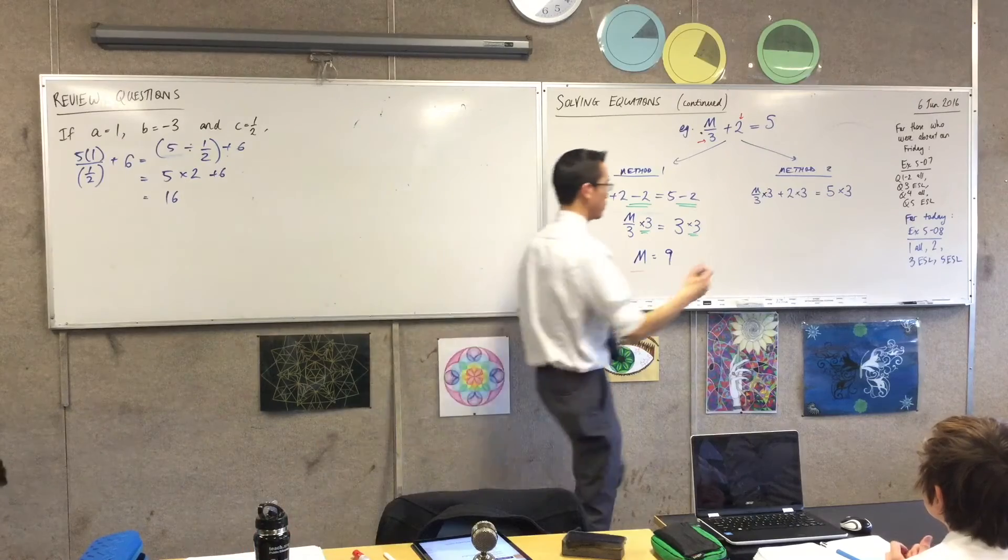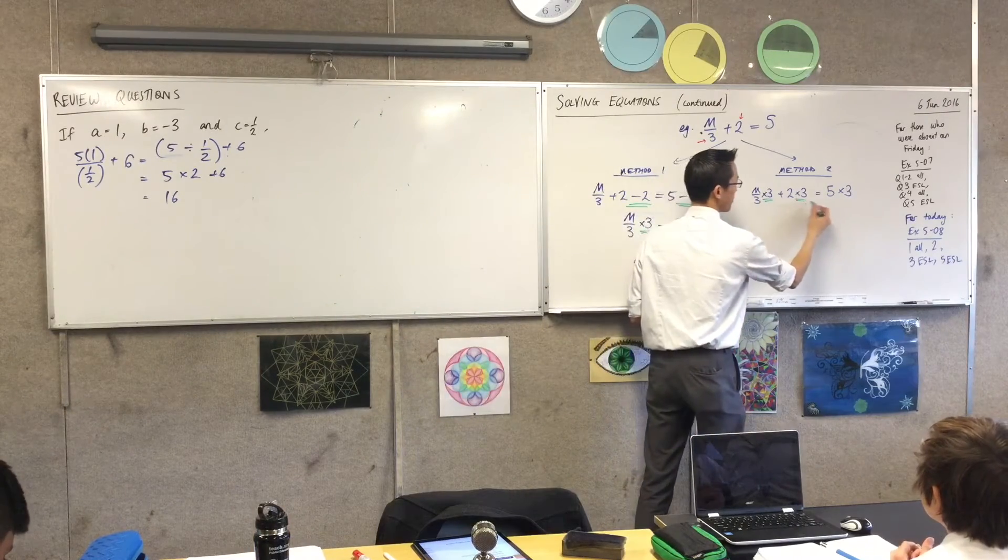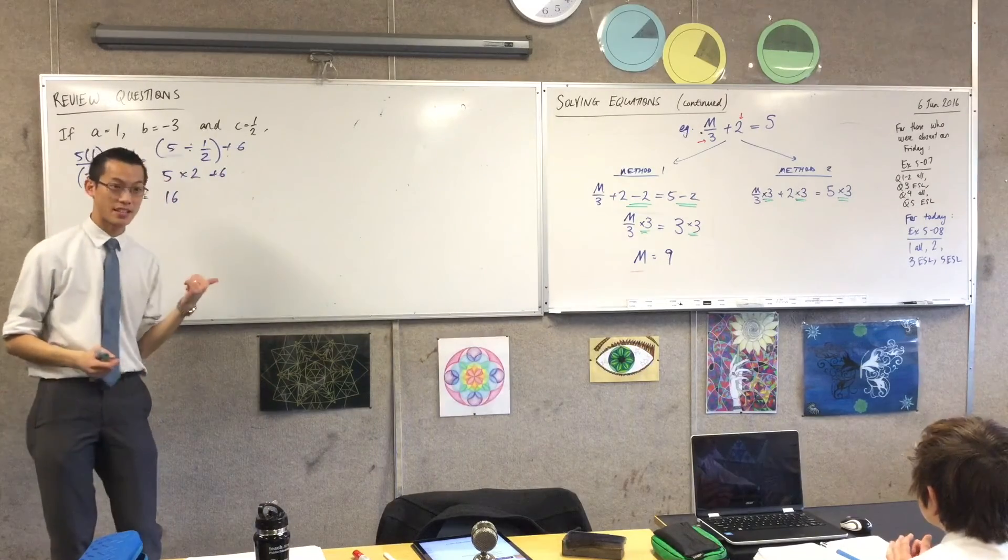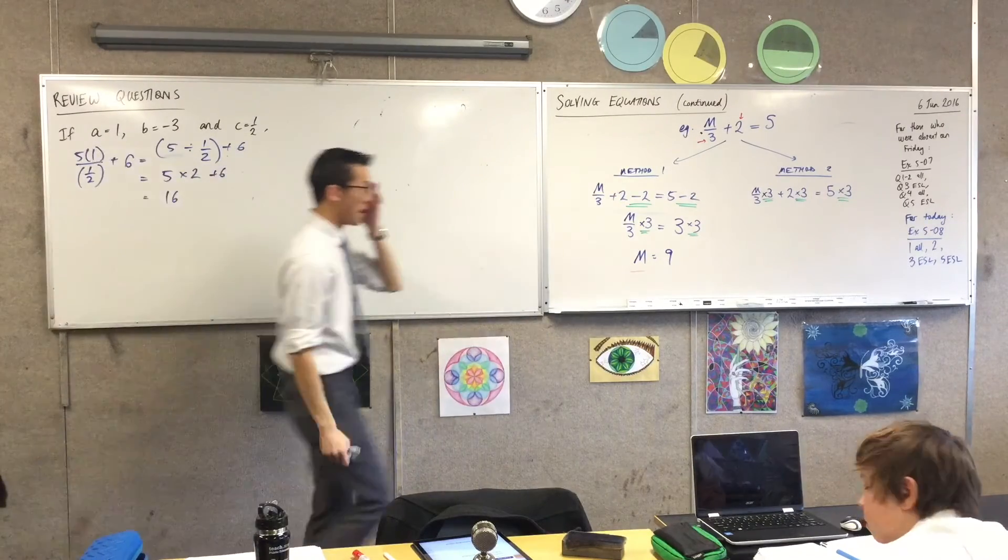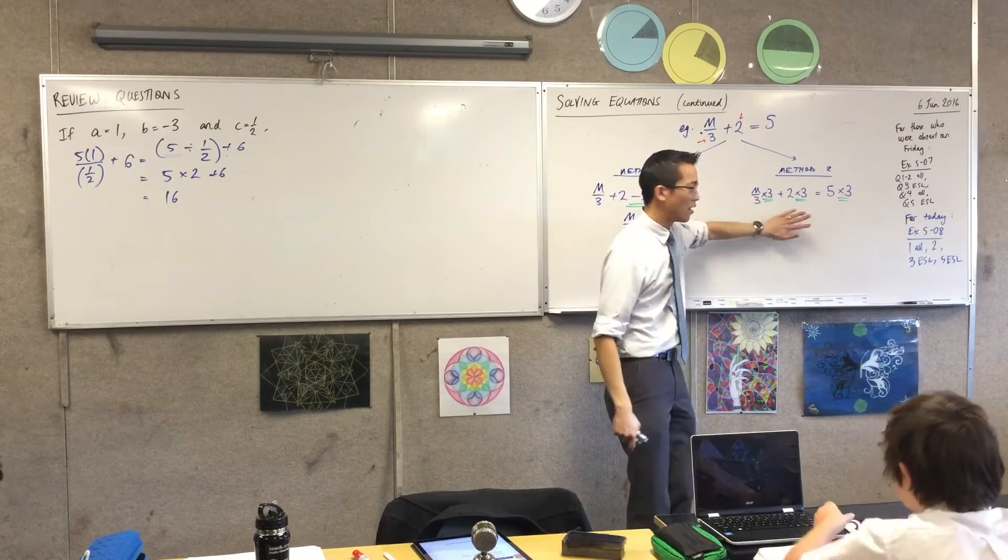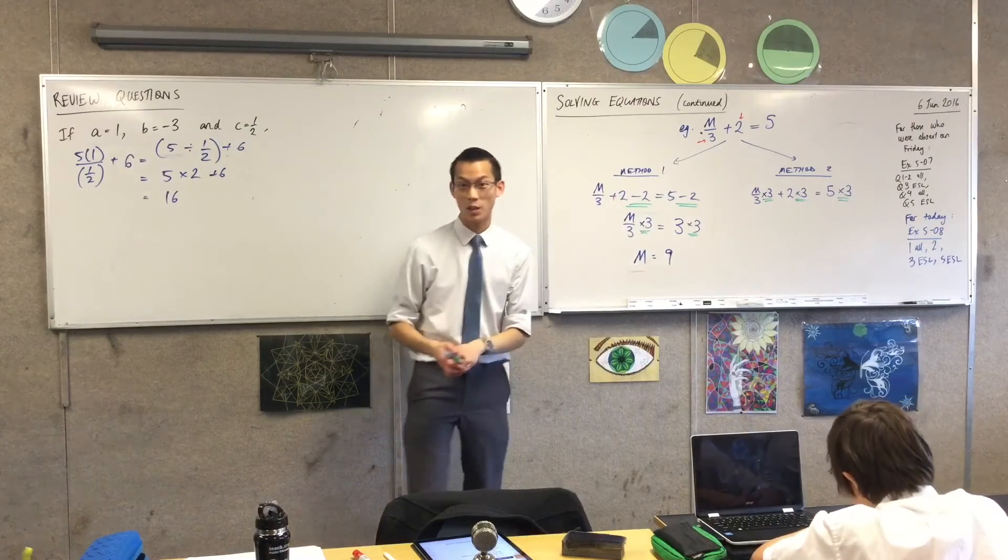Now just be careful. You can see I've multiplied the left-hand side by three, right? I had to multiply everything on the left-hand side by three. Don't miss anything out. What's the next line going to be? What's it going to look like?